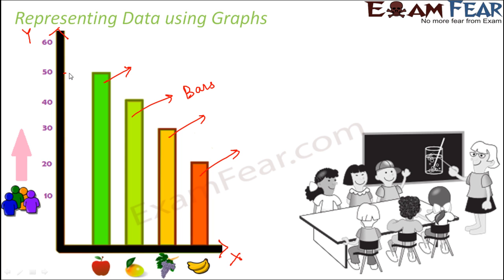For example, apple is liked by 50 students. So the height of the bar tells us that 50 students like apple.